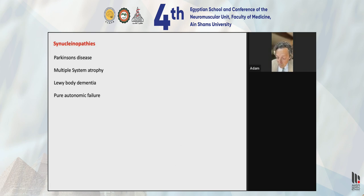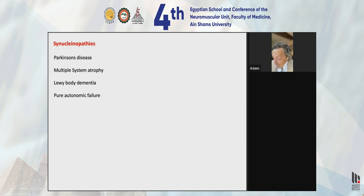Another condition I'm frequently asked to evaluate is synucleinopathy, which falls under four main categories: Parkinson's, multiple system atrophy, Lewy body dementia, and pure autonomic failure. Pure autonomic failure means only autonomic pathways — centrally and peripherally — are involved, with no cerebellar or extrapyramidal features. Autonomic failure is totally different from POTS: in POTS there is autonomic overactivity, whereas in pure autonomic failure the reflexes are not working, producing orthostatic hypotension rather than orthostatic tachycardia.